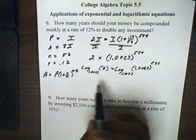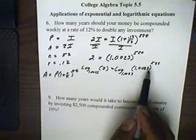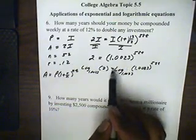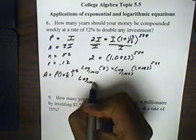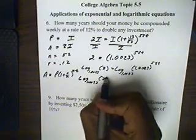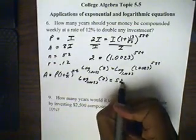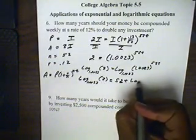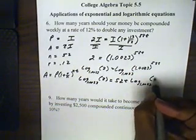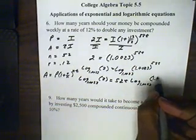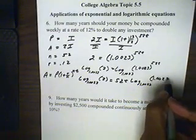Now, what this gives us is the ability to take down this exponent right here and make it a coefficient. So now it becomes log base 1.0023 of 2 equals the 52t, all times log of 1.0023 input 1.0023.